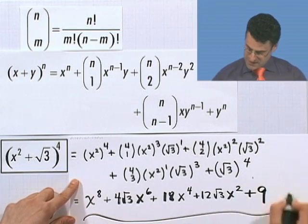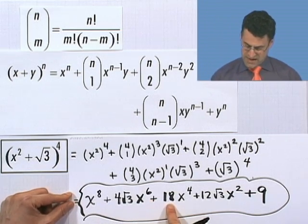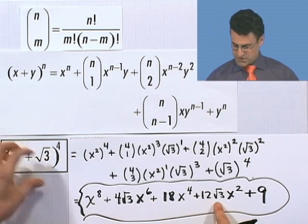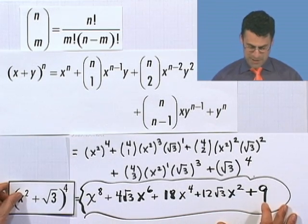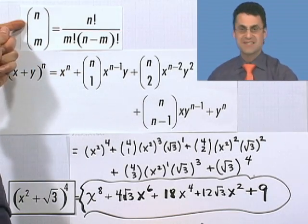So this beautiful polynomial — x⁸ plus 4√3 x⁶ plus 18x⁴ plus 12√3 x² plus 9 — is exactly the same as the compact expression (x² plus √3) to the 4th. Using the binomial theorem and binomial coefficients, you now have the power to compute any power, even 400. Computers can do this too, but you can always do it by hand using this theorem and definition. Congratulations on conquering binomial coefficients and the binomial theorem!